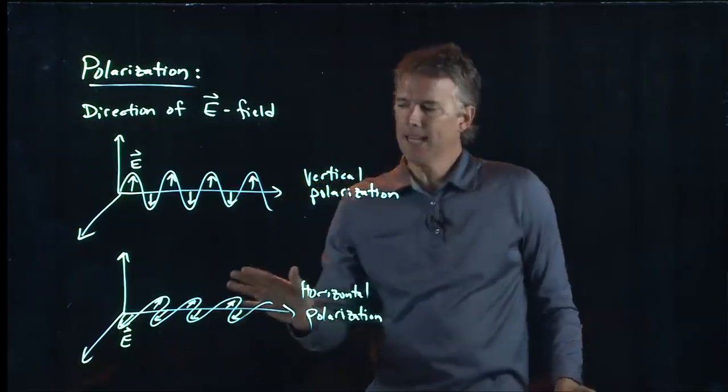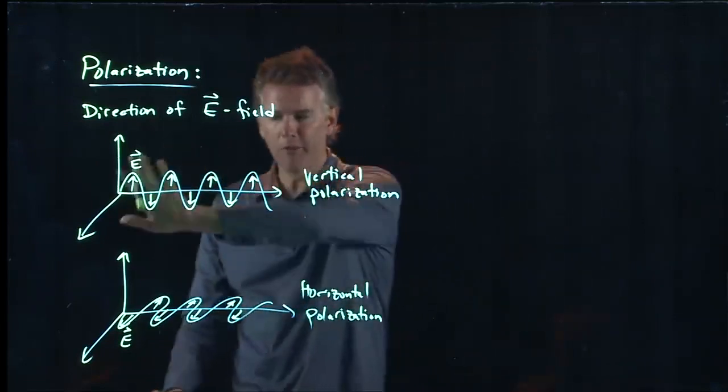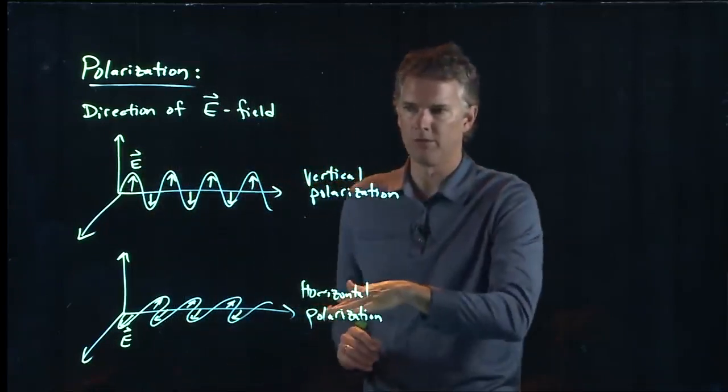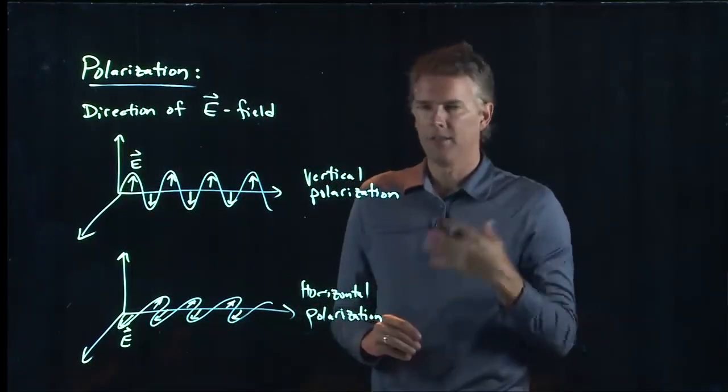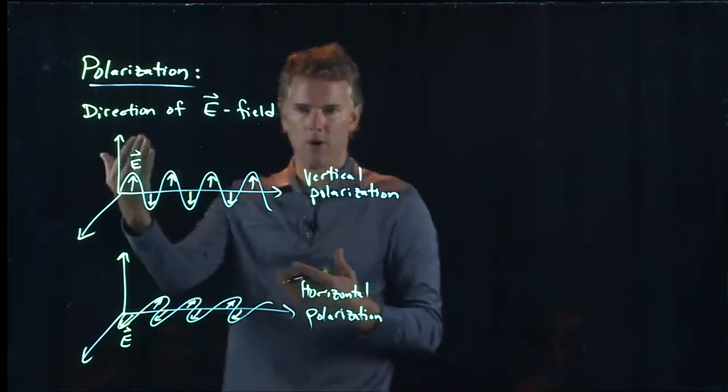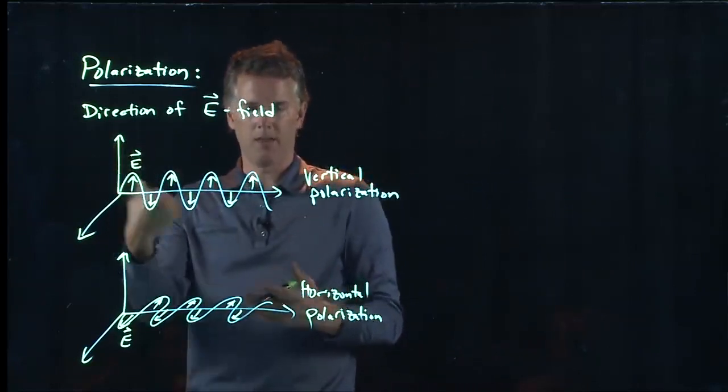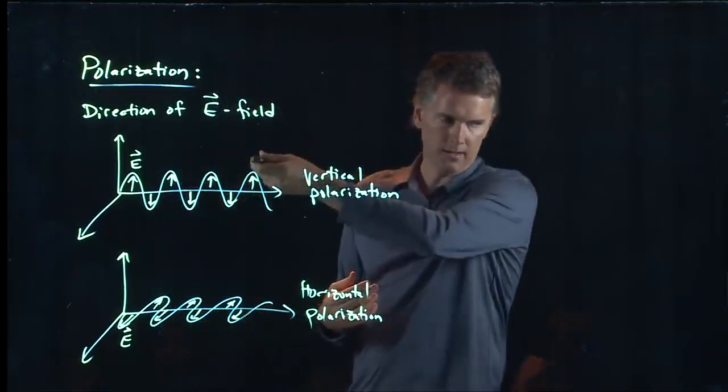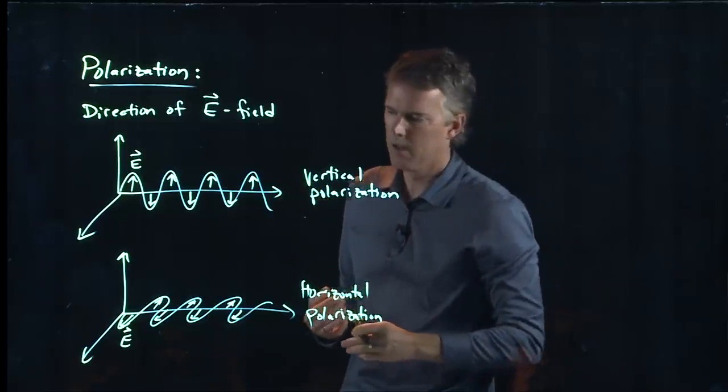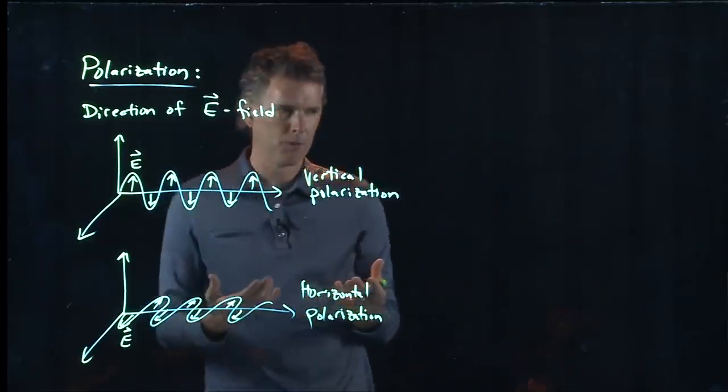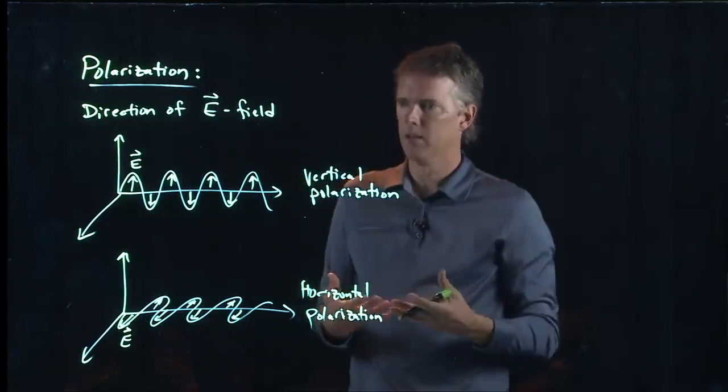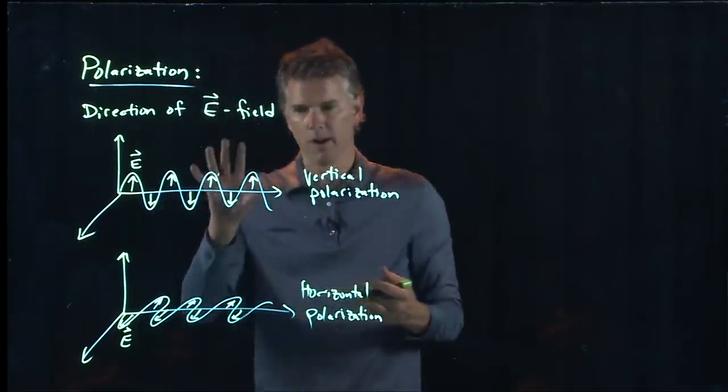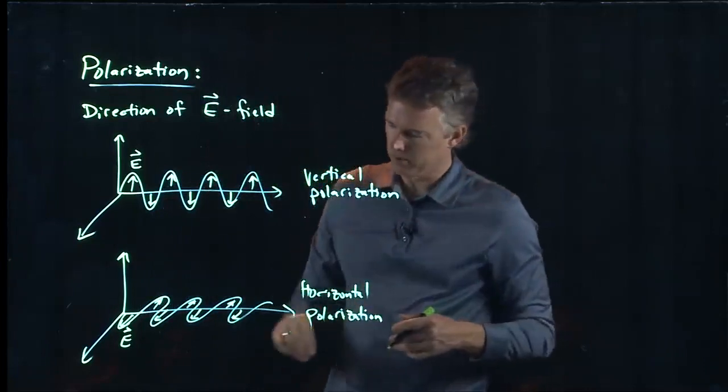And things like lasers have a preferred orientation for their electric field. They either come out vertical or horizontal. But things like sunlight have all different polarizations. They have a vertical component, they have a horizontal component, and then they have all the different angles in between. So, incandescent sources like sunlight, like a light bulb, those will have random polarization, whereas lasers will have defined polarization.